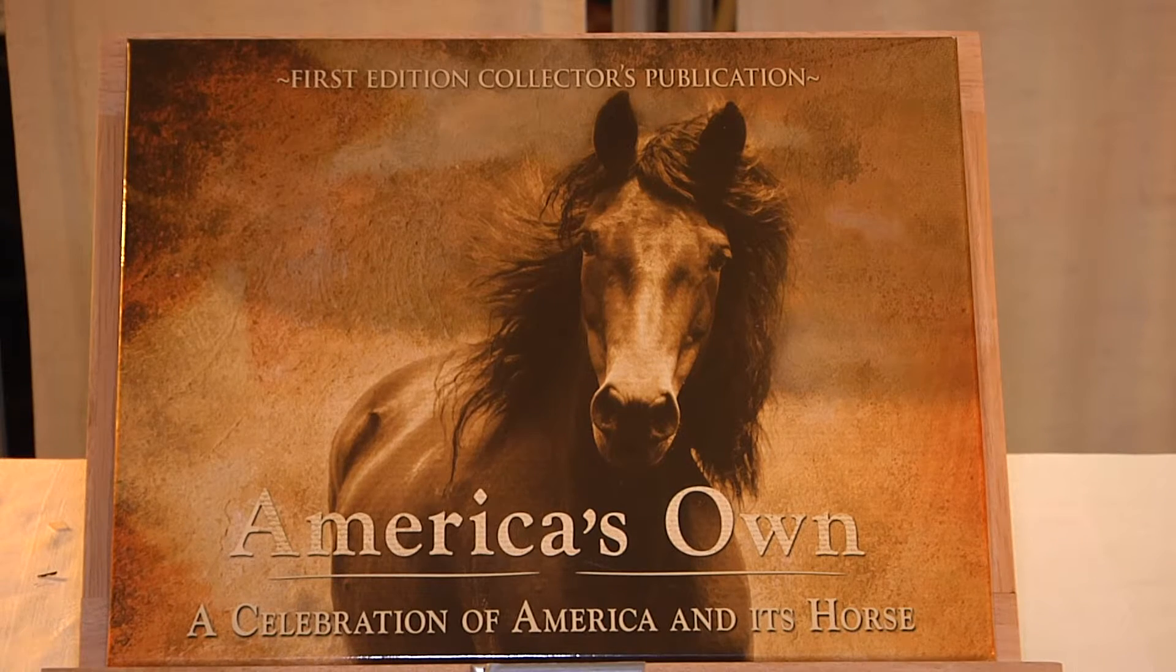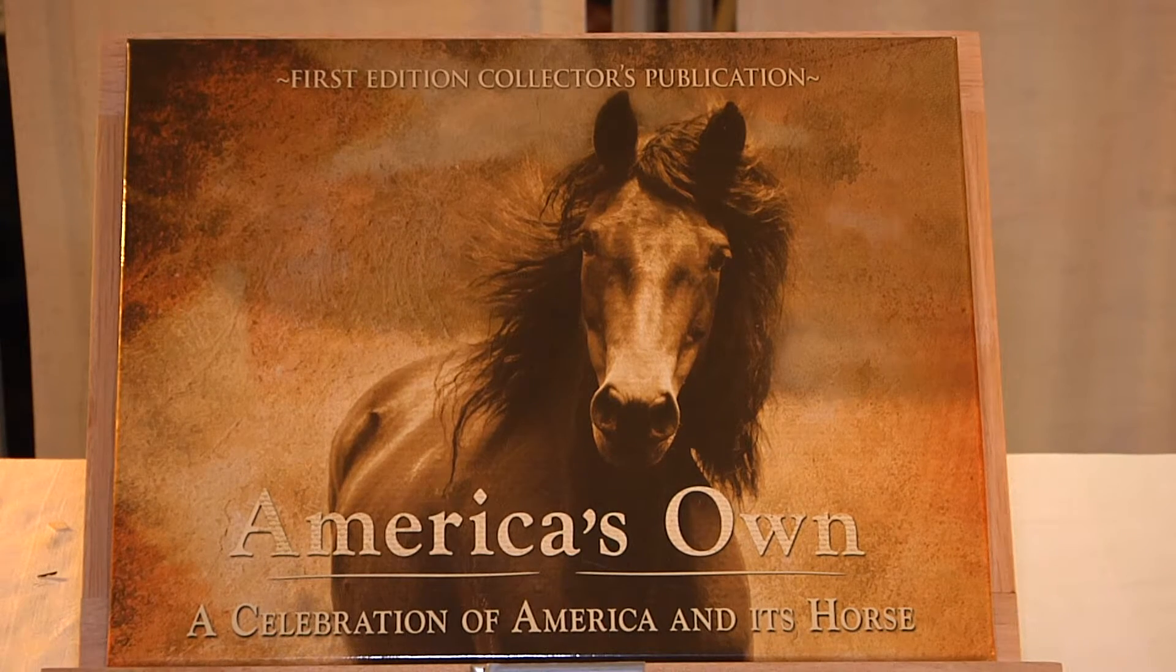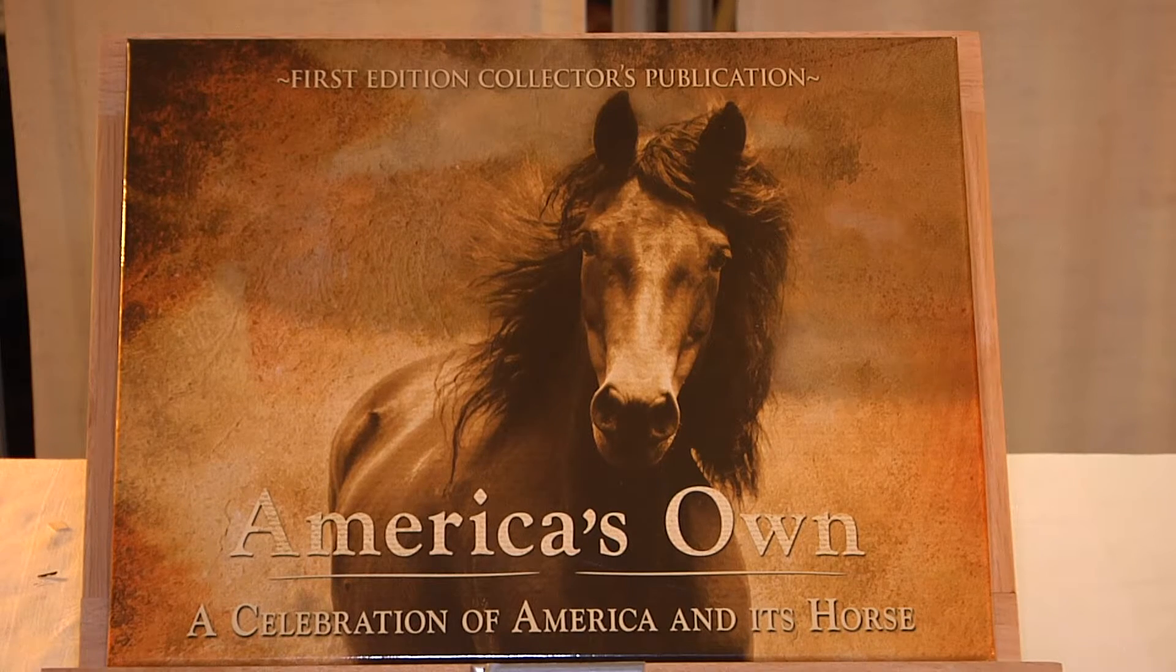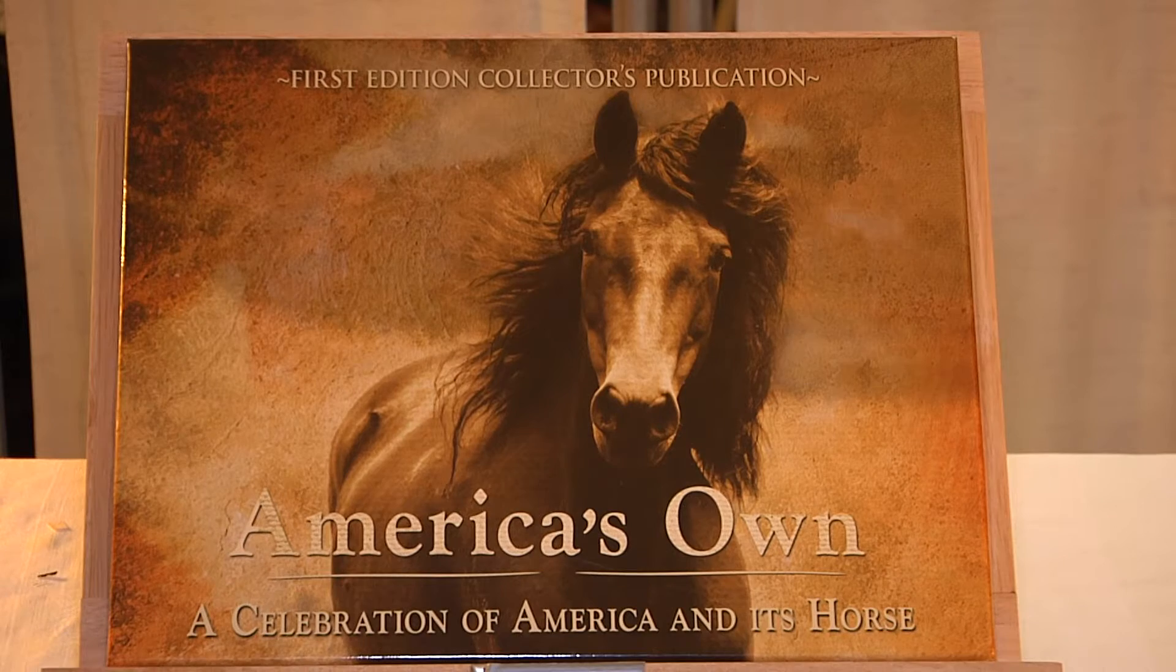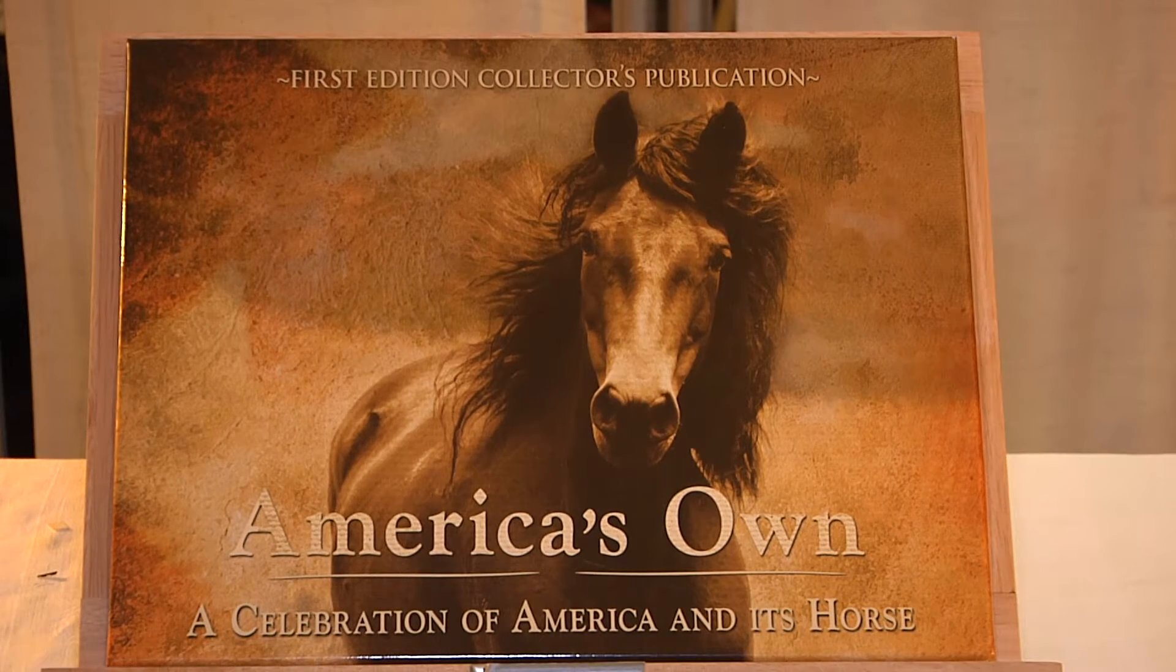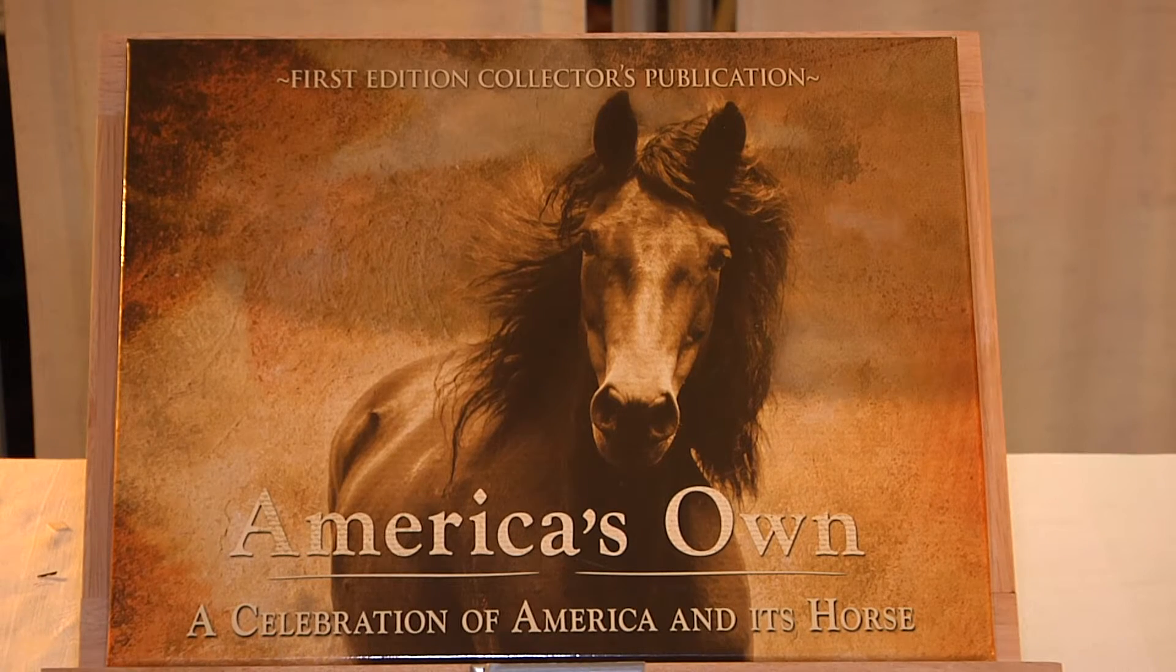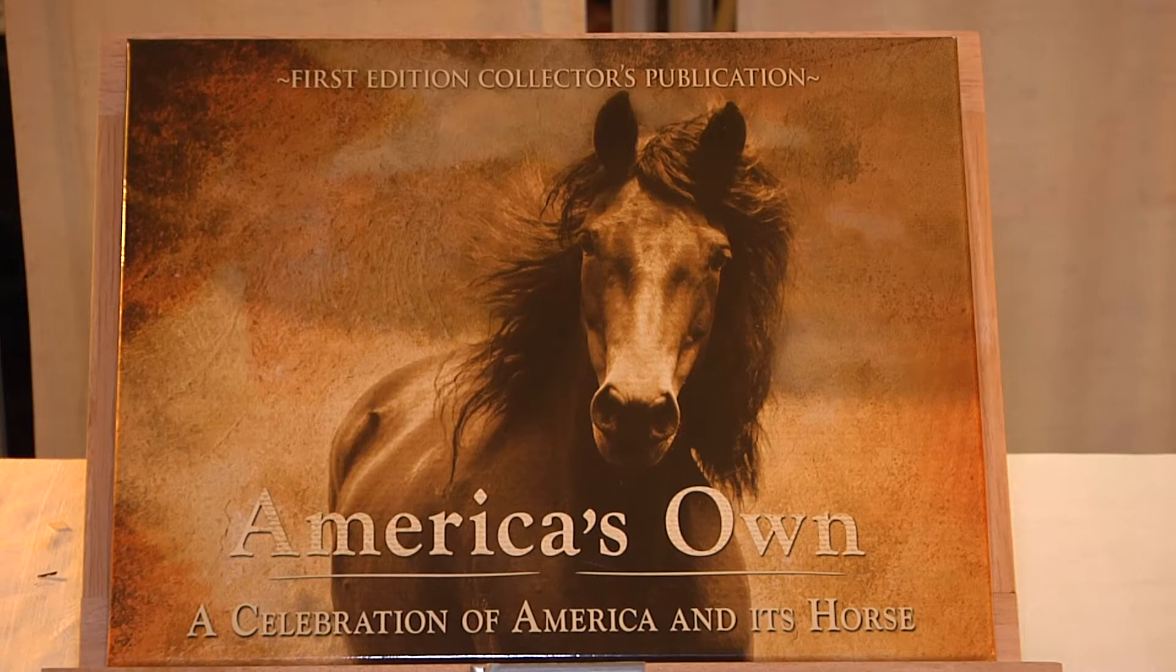In 1789, a runt of a horse was born in the state of Vermont named Figure. He became the property of Justin Morgan. Because Morgan rented Figure out as a workhorse, he became known as Morgan's Horse. Figure became the father of a new breed of horse that built, shaped, and changed America's history time and time again.